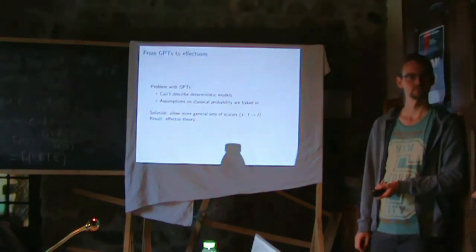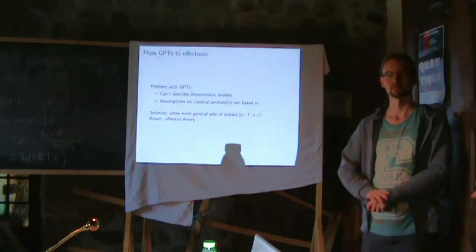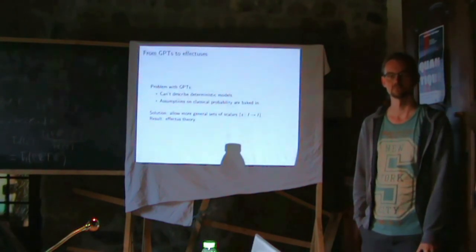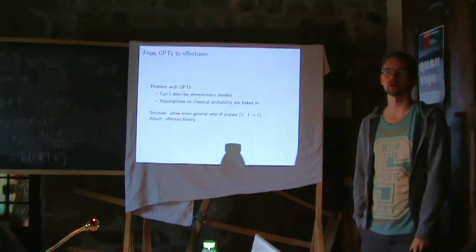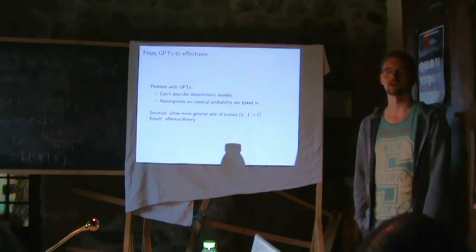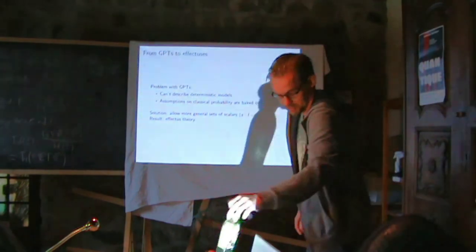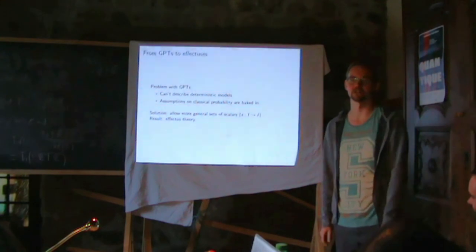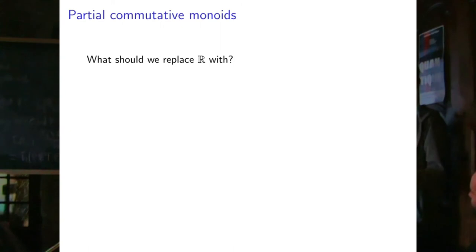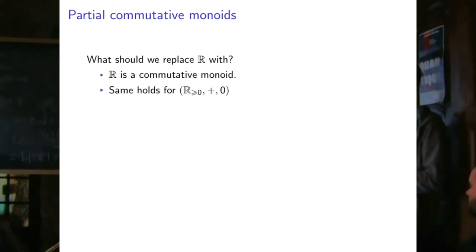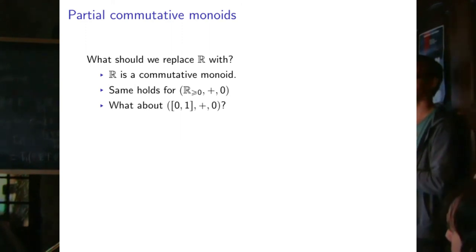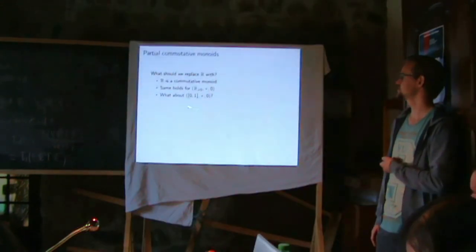If we're going to replace the real numbers, what should we replace them with? R is a commutative monoid with addition, and the same holds for positive reals. But the real unit interval is not a monoid — so what structure does it have? Something called a partial commutative monoid, or PCM. The idea is that addition is not always defined. We write x perpendicular to y (x is orthogonal to y) to mean the sum is defined. The axioms are: if the left-hand side of an equation is defined, then the right-hand side is defined too — giving commutativity, associativity, and a zero element, all in this partial sense.